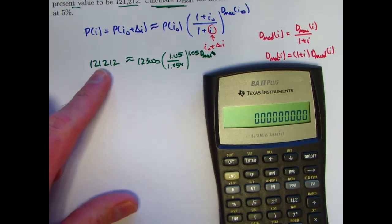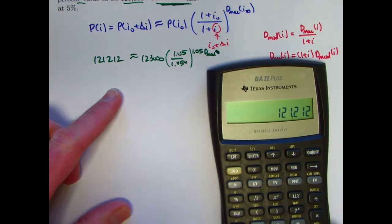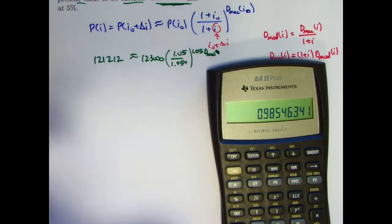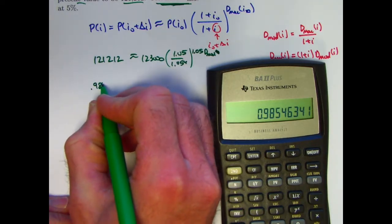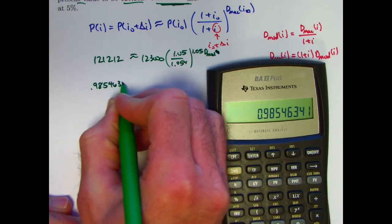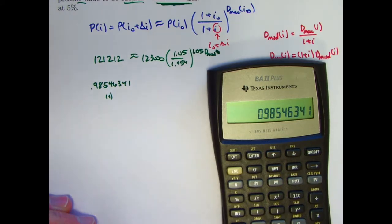I will first divide both sides by 123,000. So take 121,212 and divide by 123,000. I will go ahead and write these numbers down. But I will also store them in my calculator registers. This one I'll store in register 1.